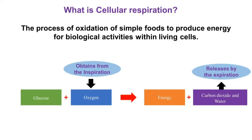Organisms gain food from the digestive system and oxygen from the respiratory system by inspiration. These two components react with each other and give energy as the main product, and carbon dioxide and water as by-products.